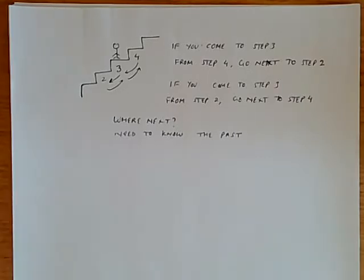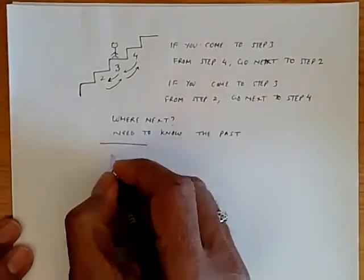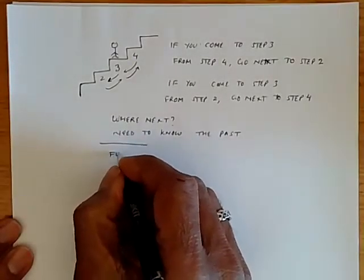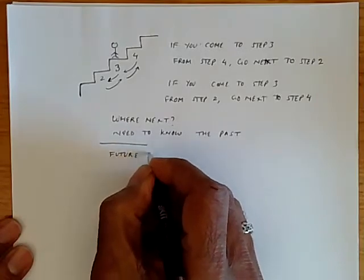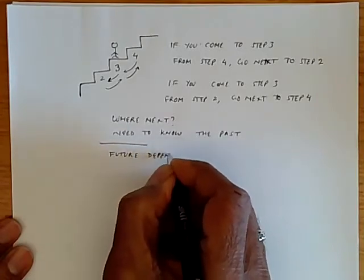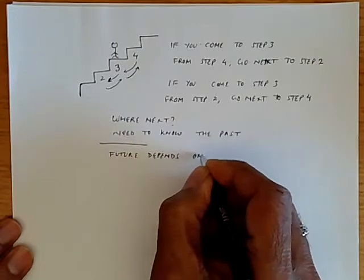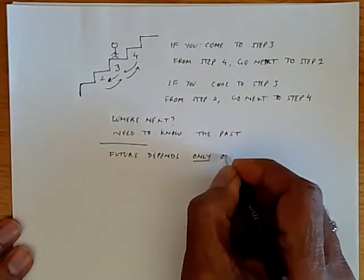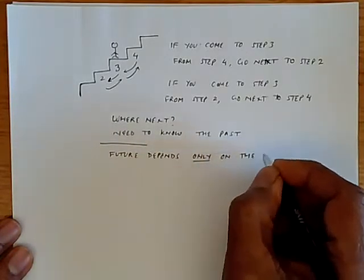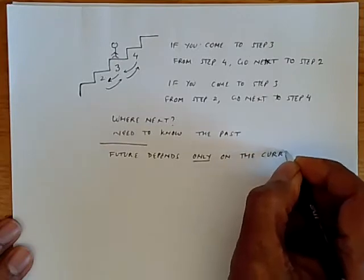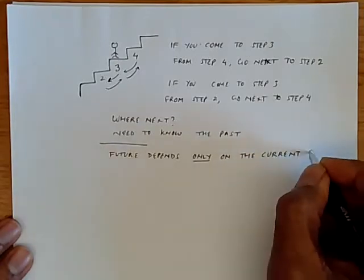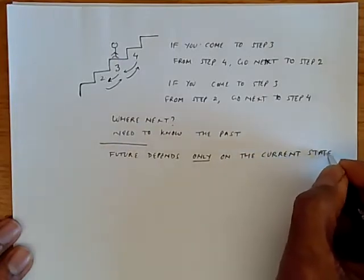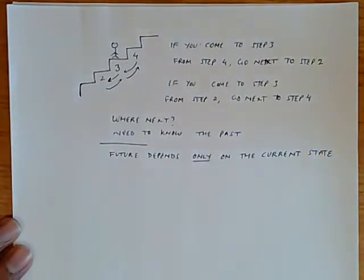So we could come up with a simplifying rule that says, what if we say that the future depends only on the current state. Only on the current state.